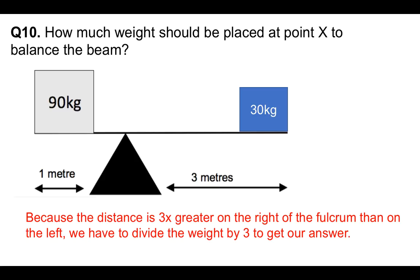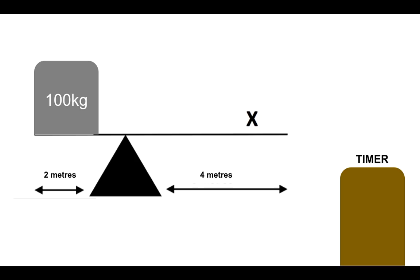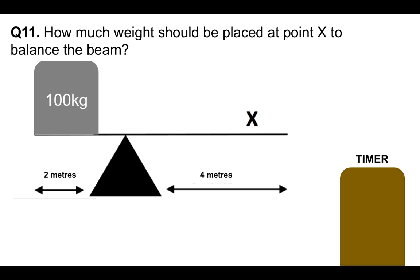Now it's your turn — I'm going to give you three questions, so we're really starting to develop and grow. Post your answers to the next three questions in the comments section below. Same sort of question: how much weight should be placed at point X to balance the beam? You've got two meters on the left and four meters on the right. Apply what you just learned to this. If you need to pause it or go back to question ten to review, please feel free to do so.